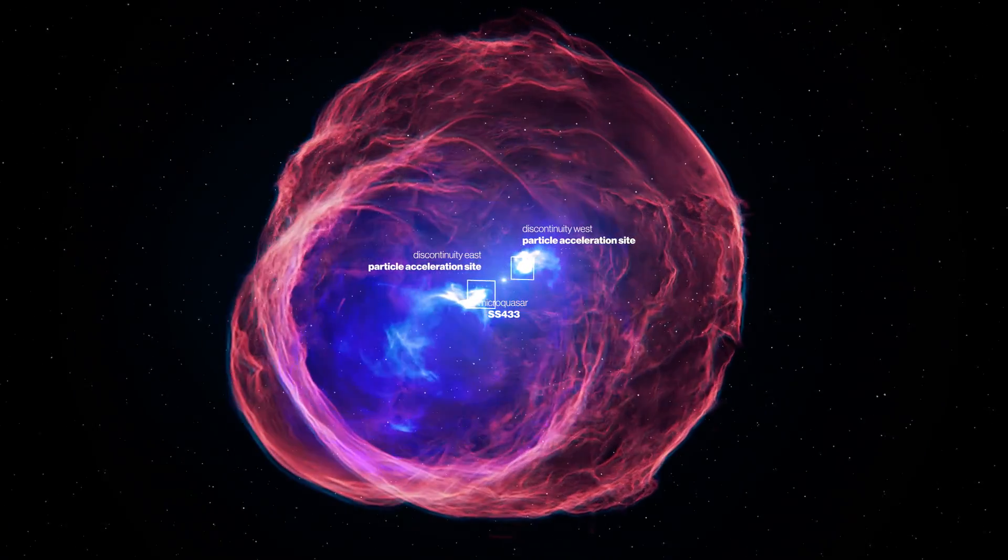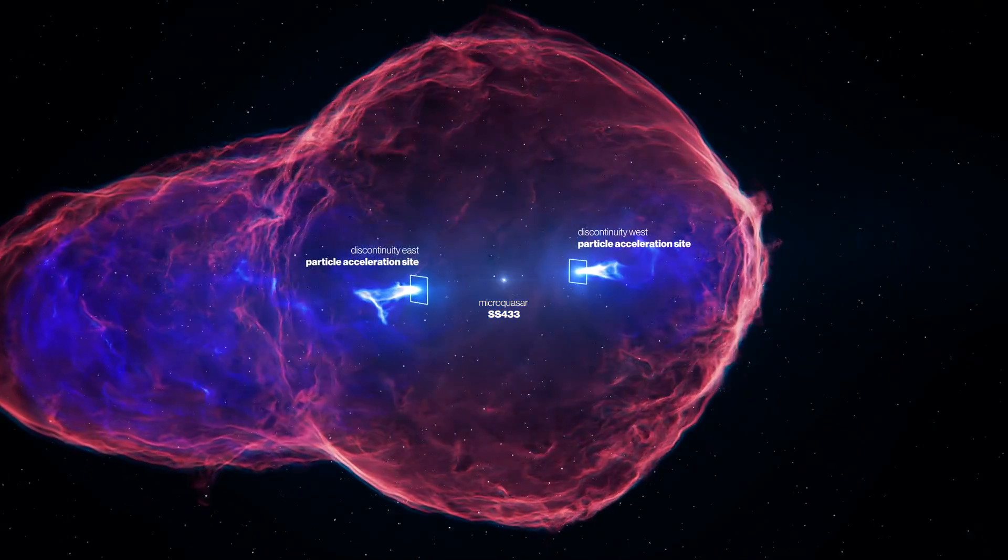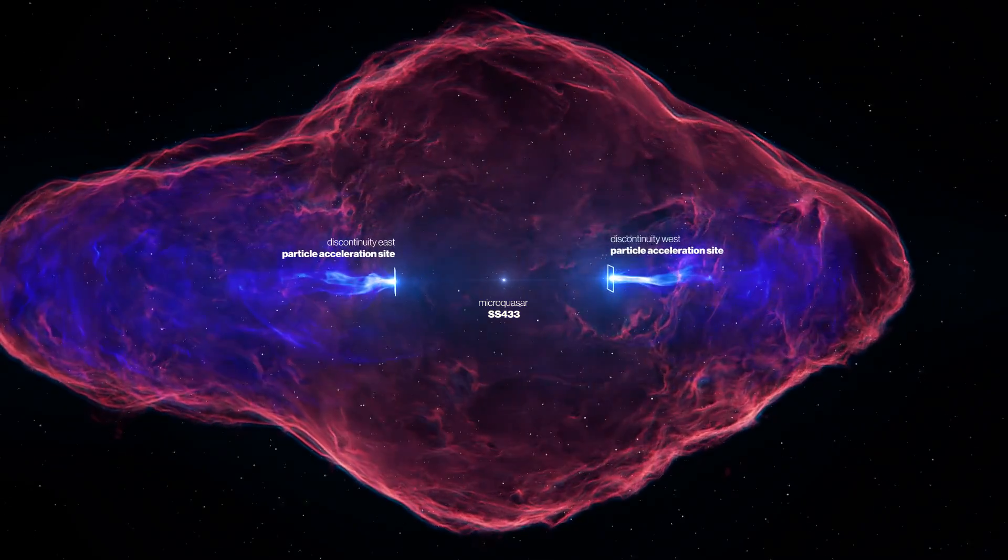Scientists from the HESS collaboration used gamma-ray observations to understand the acceleration and transport of relativistic electrons in the jets of this microquasar.